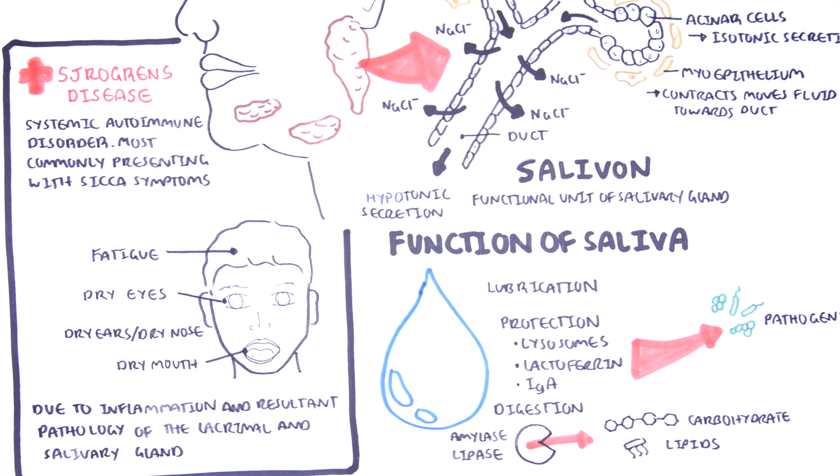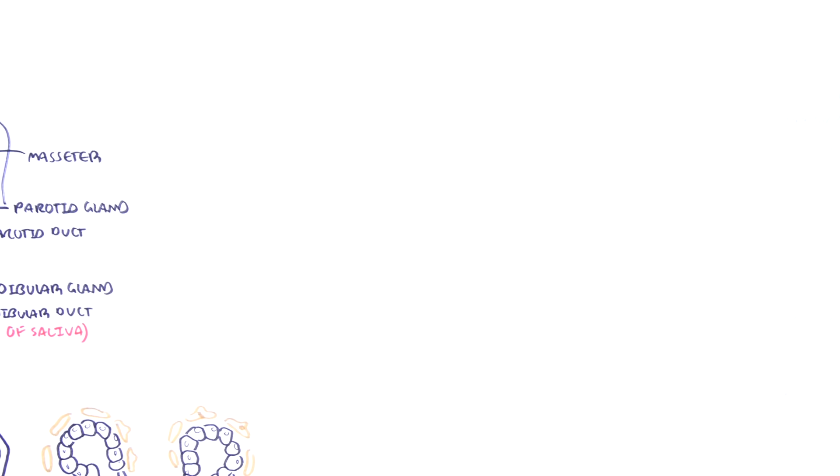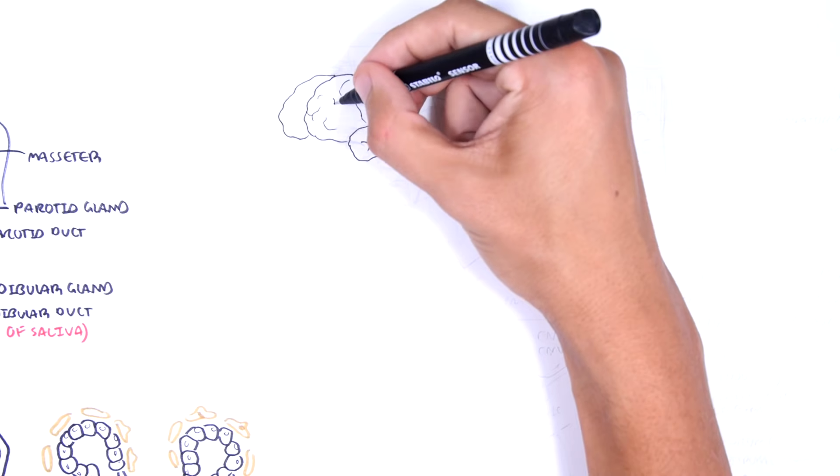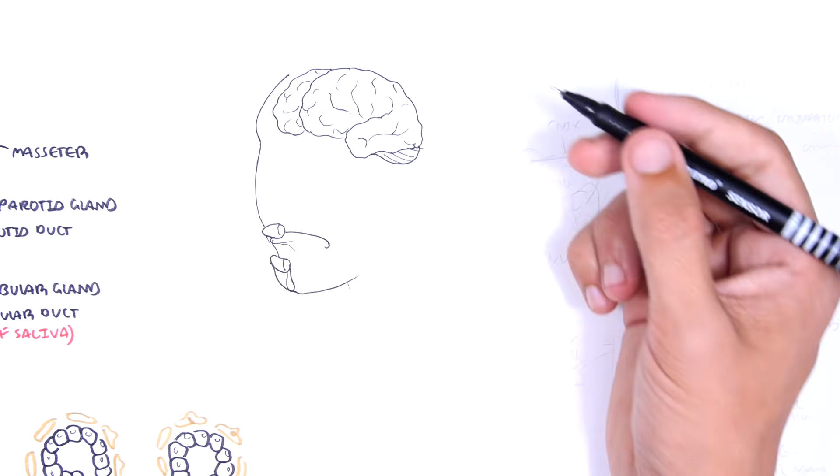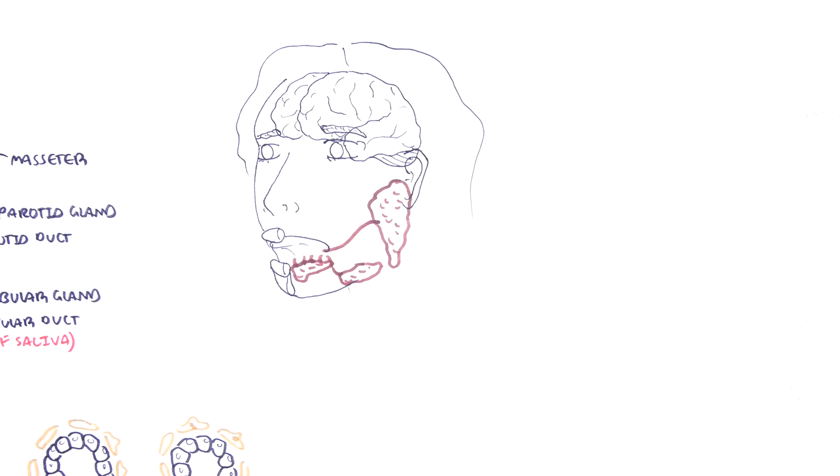Sjogren's disease is a rheumatological disease and is associated with other rheumatological conditions including rheumatoid arthritis. Saliva is produced by the salivary glands of which we have three pairs. So what stimulates saliva secretion?